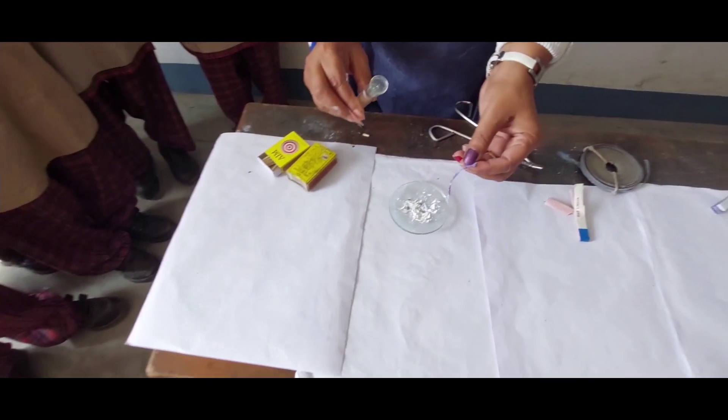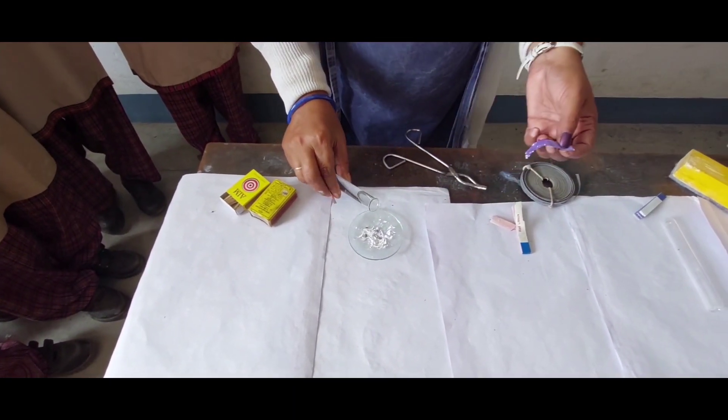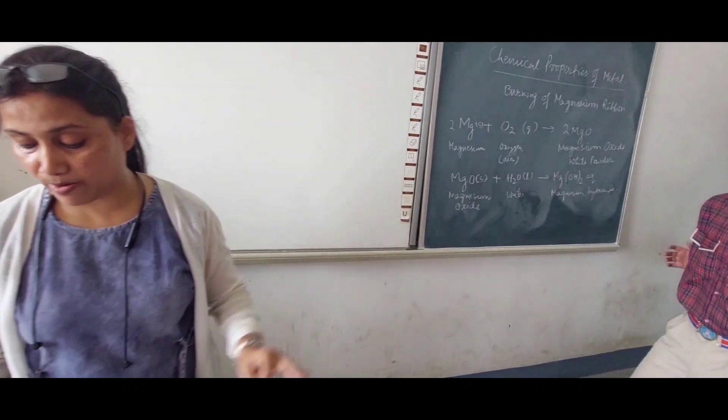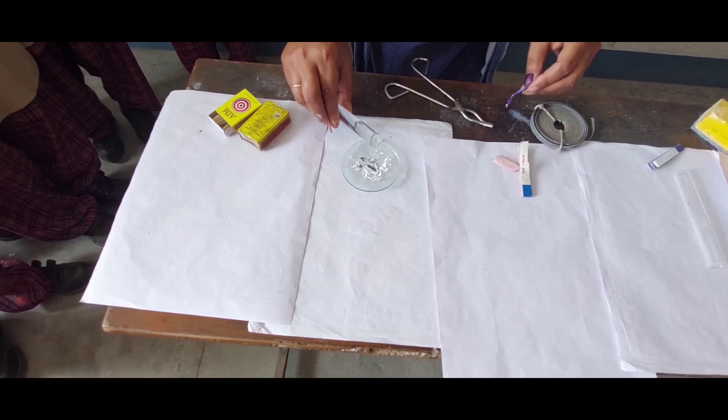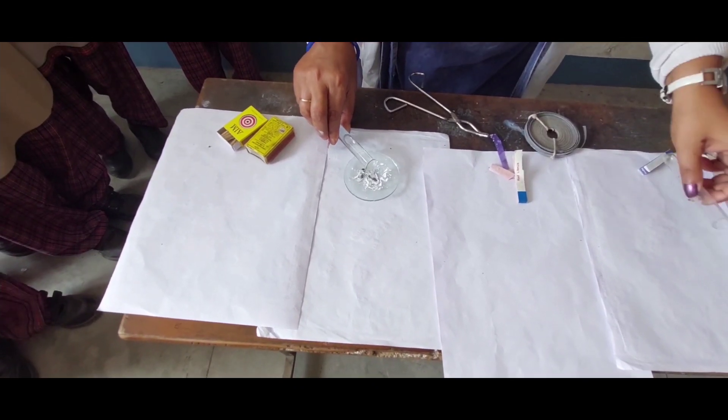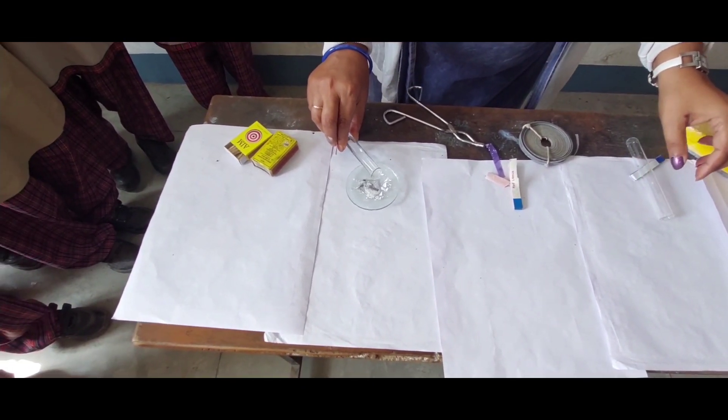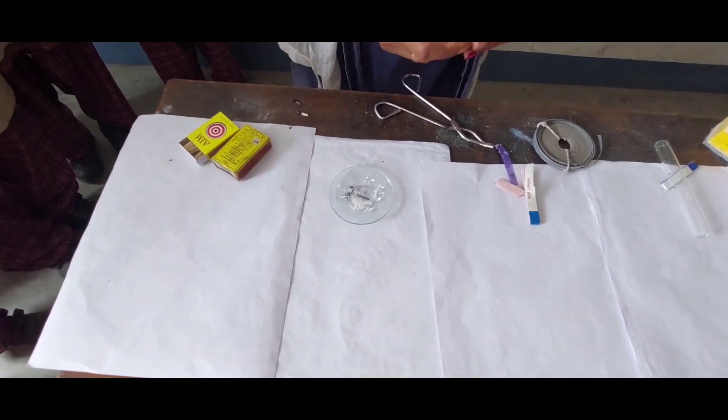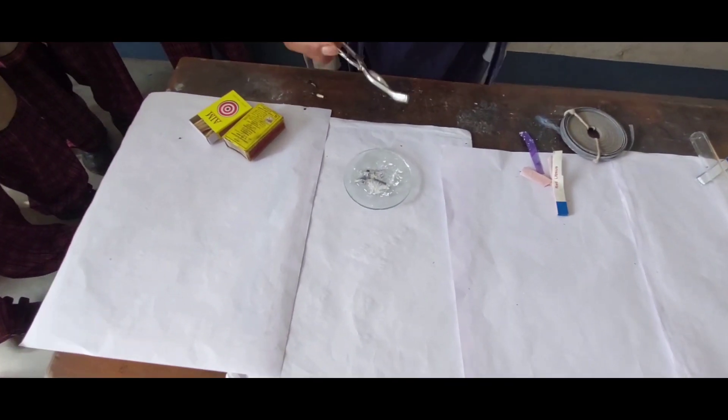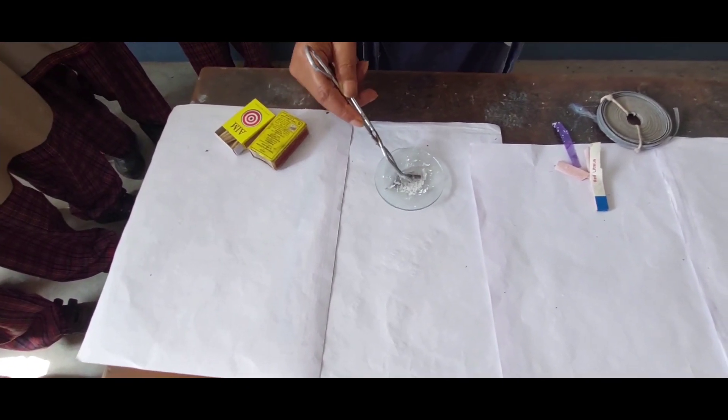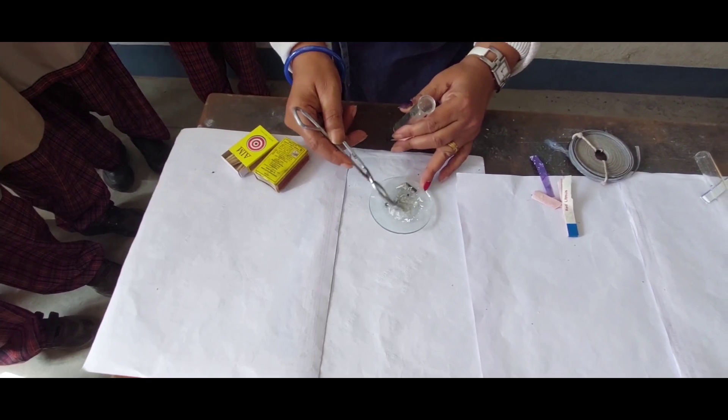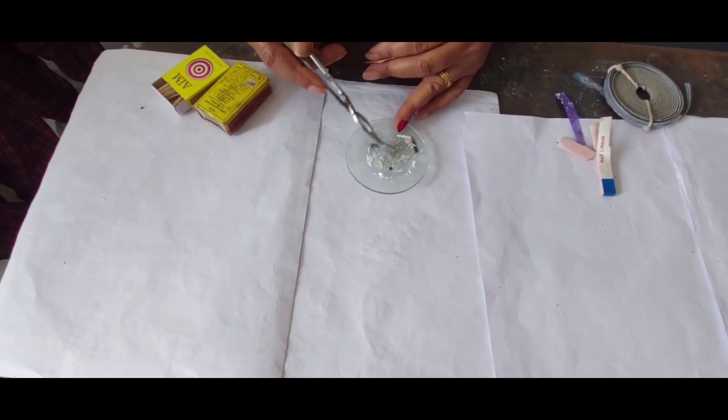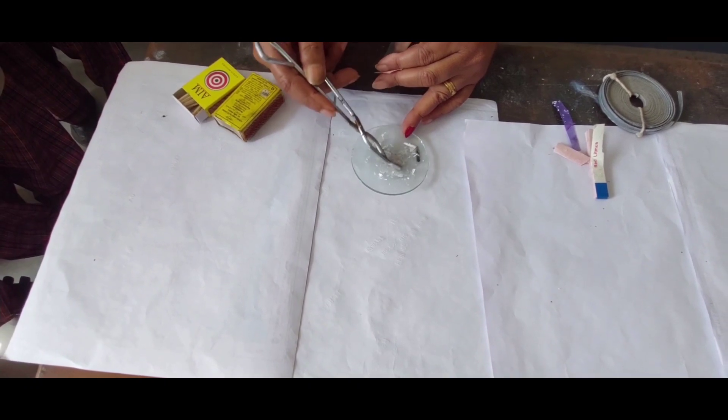If we mix magnesium oxide with water, magnesium hydroxide will be formed. Let's mix it. Let's try to dissolve it with this tong only. Since we are doing it in the class, we'll see that it won't dissolve completely - it is dissolving partially.